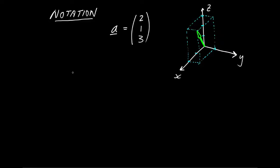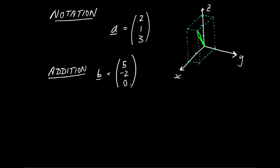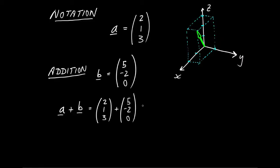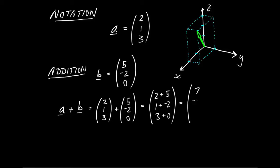The simplest thing you might want to do with a couple of vectors is to add them up. So let's think about vector addition. Let's give ourselves a second vector B: 5, minus 2, 0. I want to add vector A plus vector B. We substitute in 2, 1, 3 and add it to 5, minus 2, 0. What we do is simply add the first component of A to the first component of B, and so on. So that's 2 plus 5, 1 plus minus 2, and 3 plus 0 — giving us 7, minus 1, and 3.